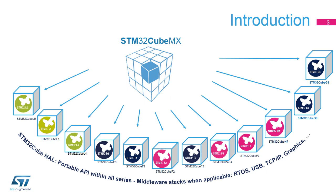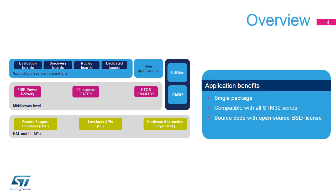A consistent set of middleware components is also provided, including RTOS, USB, TCP/IP, and graphics. The STM32CubeG4 MCU package runs on STM32G4 series microcontrollers based on the ARM Cortex-M4 processor.